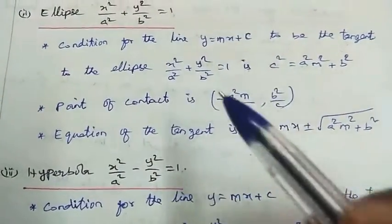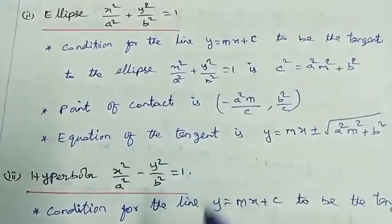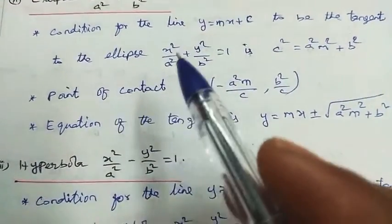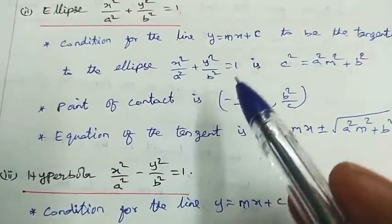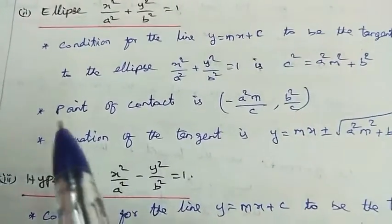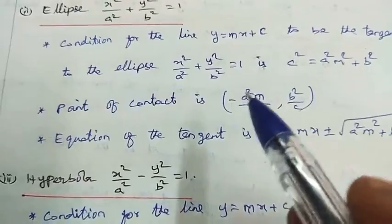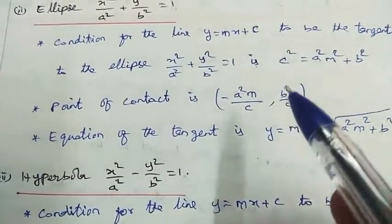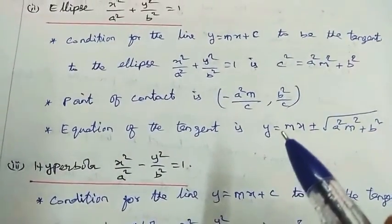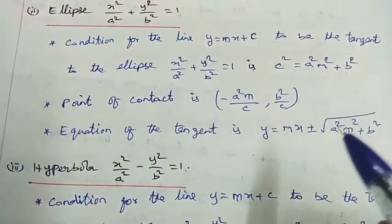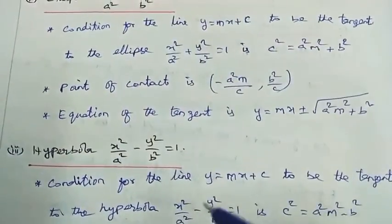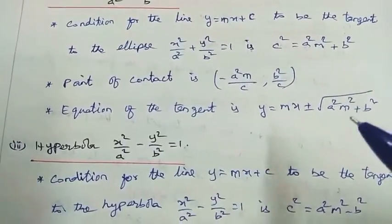Second one: condition for the line y equal to mx plus c to be the tangent to the ellipse x square by a square plus y square by b square equal to 1 is c square equal to a square m square plus b square. Point of contact is minus a square m by c, comma b square by c. Equation of the tangent is y equal to mx plus or minus square root of a square m square plus b square.